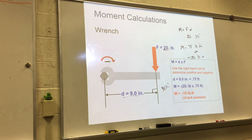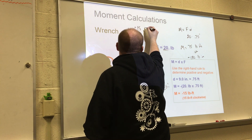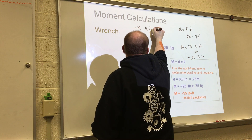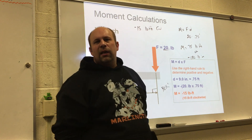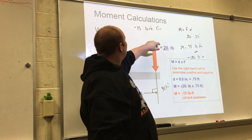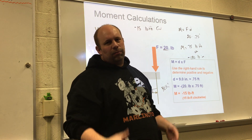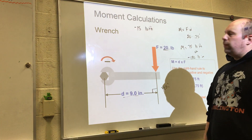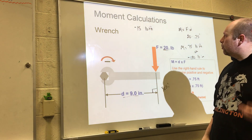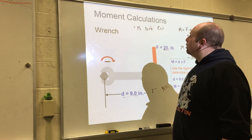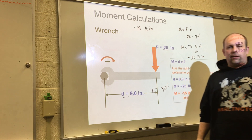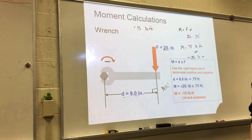The negative sign implies it's clockwise. Don't say 'negative 15 pound-feet clockwise' because that's a double negative — it would imply counterclockwise. Either say 'negative 15 pound-feet' and we know it's clockwise, or say '15 pound-feet clockwise.' Pick one or the other.